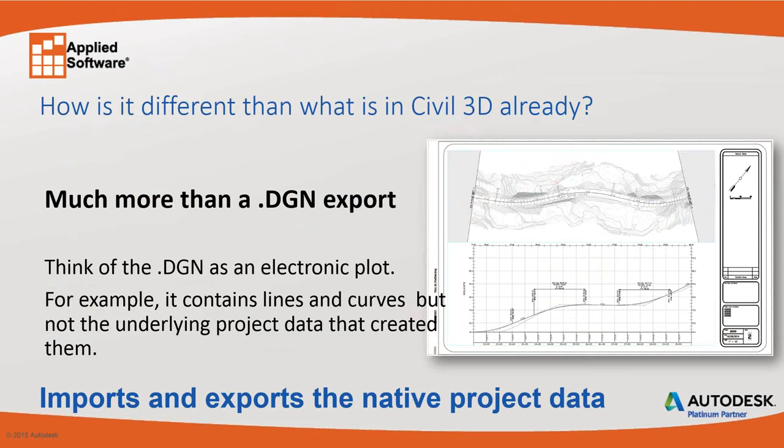So how is this different from what Civil 3D already does? Most people think that because Civil 3D can open a DGN file, that means it's opening project data. But most of the time when you import a DGN file, all that data is converted over to lines and arcs. Think of a DGN as an electronic plot — it contains lines and curves, but nothing underlying project data.